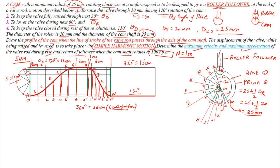From each marked point, draw a circle equal to the roller follower diameter of 20 mm. Do this for all points from the ascent phase (B through G), through the dwell (G to H), and for the return phase (H to N). These circles represent the successive positions of the roller follower.